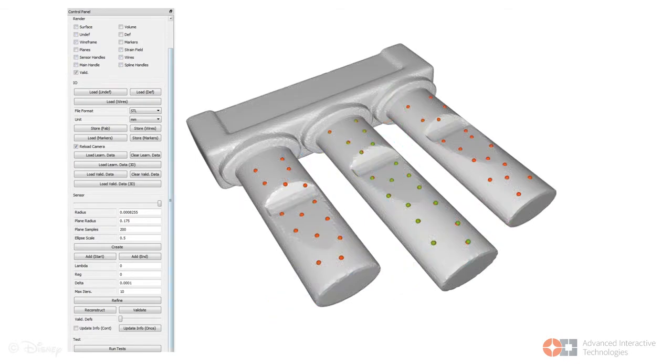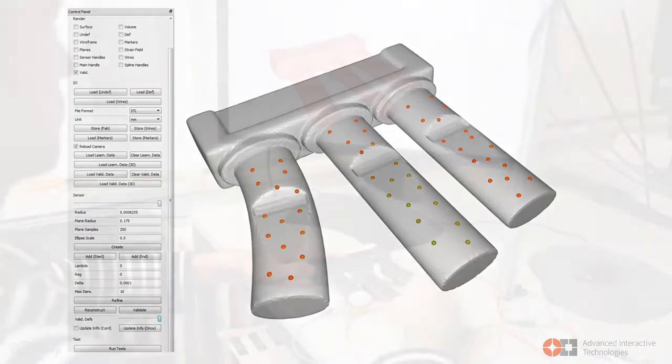In order to make 3D printed objects deformation aware, we embed piezoresistive wires that change their resistivity as a function of deformation.